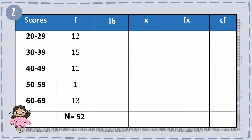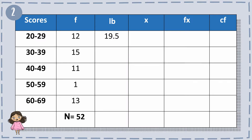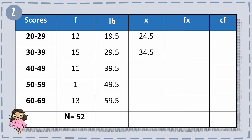Just like before, we compute Lb by subtracting 0.5 from the lowest score value. So 20 minus 0.5 equals 19.5, 30 minus 0.5 equals 29.5, and so forth. For x, we add the lowest and highest value in each interval and divide by 2. So 20 plus 29 equals 49, divided by 2 gives 24.5. Next, 30 plus 39 equals 69, divided by 2 gives 34.5, and so on.